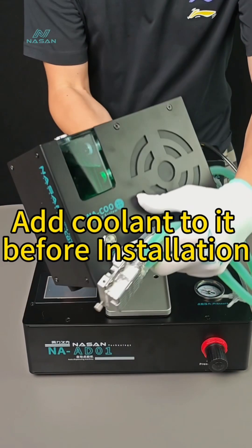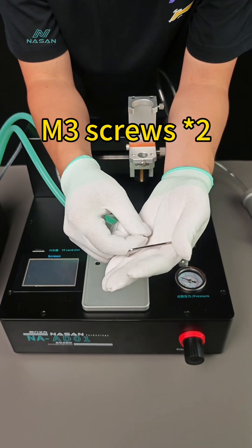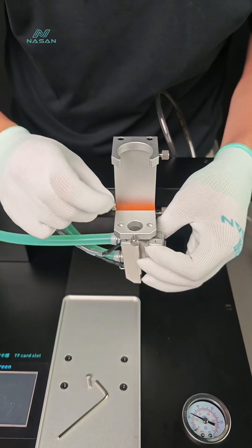Add coolant to cooling system before install. Can check our other installation video for adding coolant. And then let's install the cooling system. We use two M3 screws and one screwdriver here to these two positions.